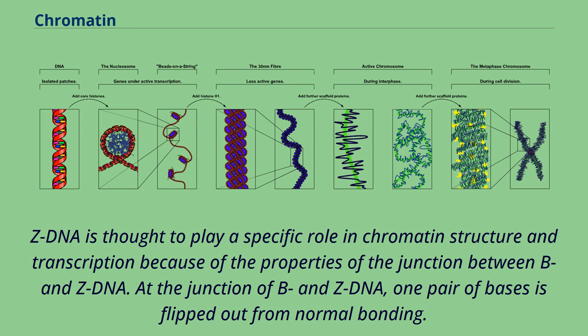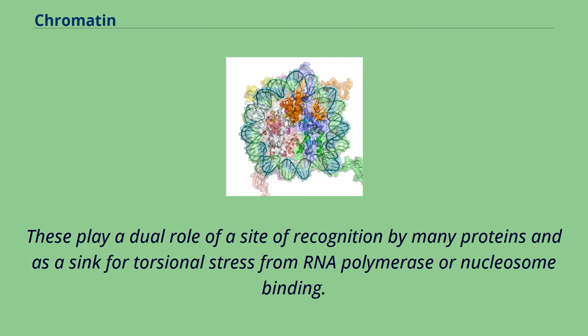At the junction of B and Z DNA, one pair of bases is flipped out from normal bonding. These play a dual role of a site of recognition by many proteins and is a sink for torsional stress from RNA polymerase or nucleosome binding.